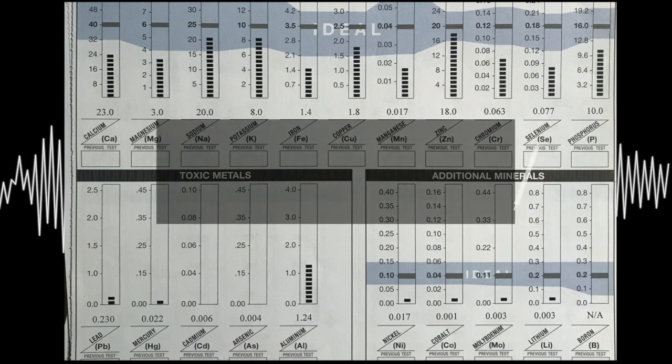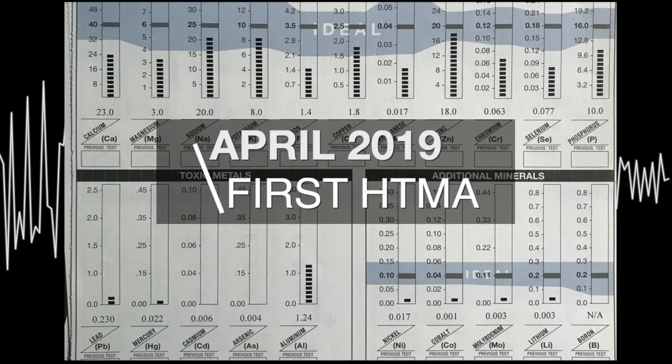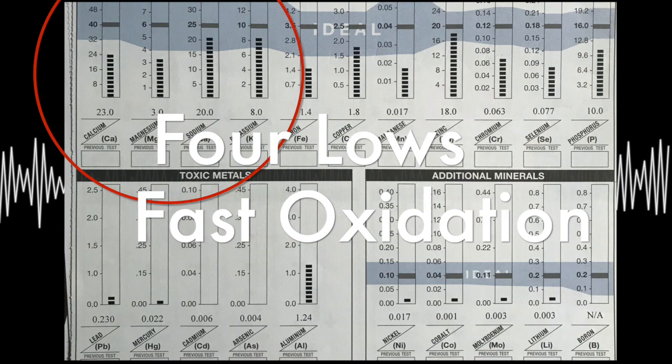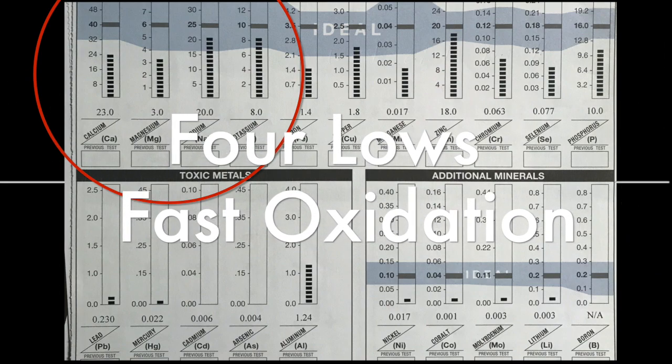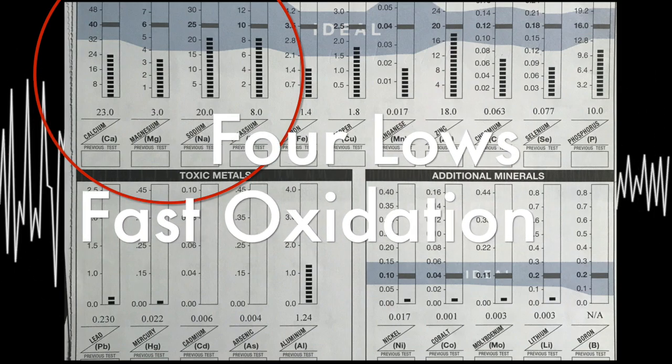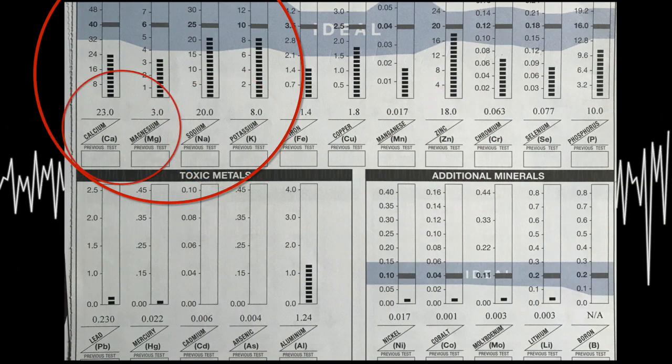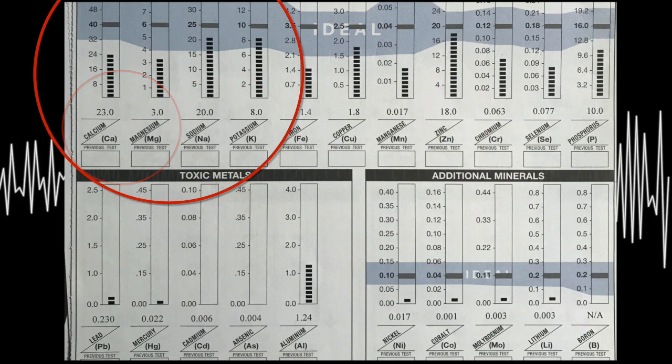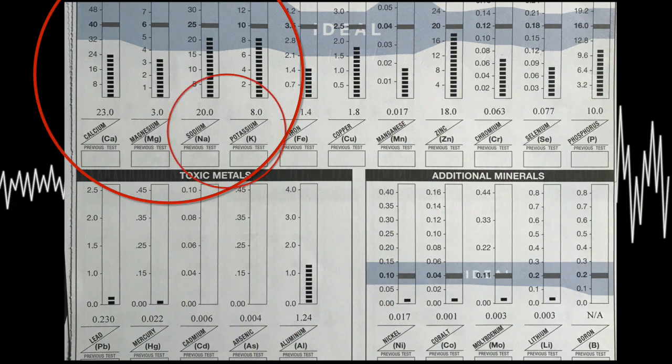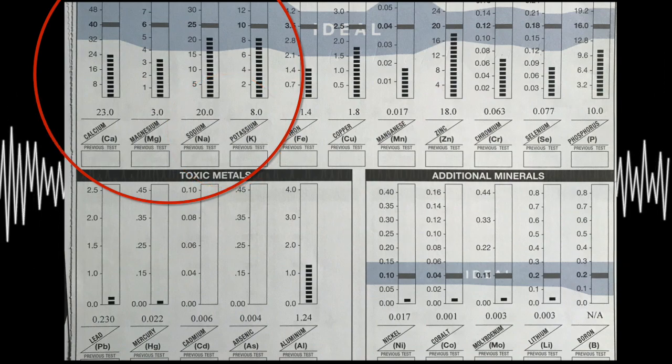When I saw her in April of 2019, we ran our first hair tissue analysis. And of course, she was in a four low pattern. She was in a four low pattern in fast oxidation. As we know, adults should never be in fast oxidation. So what that means, her sodium and potassium were elevated in comparison to her calcium magnesium. So we see what is causing her adrenals, because sodium and potassium is always representing the adrenal glands.